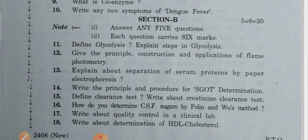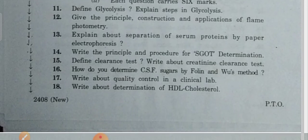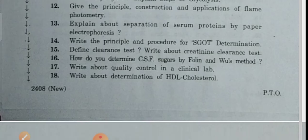Section B questions: Define glycolysis and explain the steps in glycolysis. Give the principle, construction, and applications of flame photometry. Explain about separation of serum proteins by paper electrophoresis. Write the principle and procedure of specific gravity of urine determination. Define clearance test and write about creatinine clearance test.